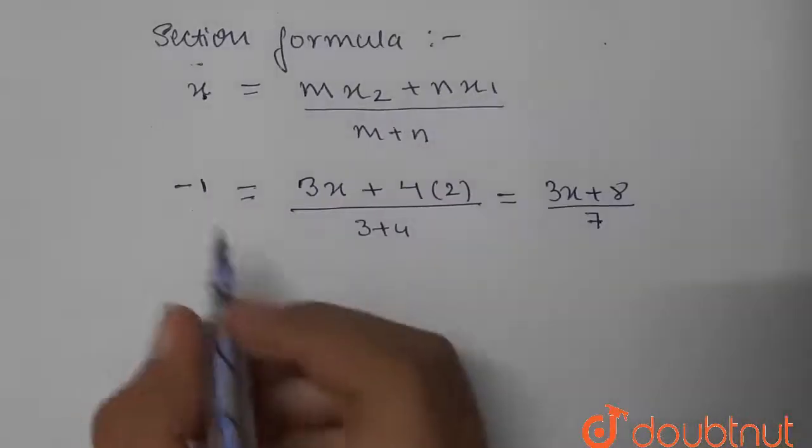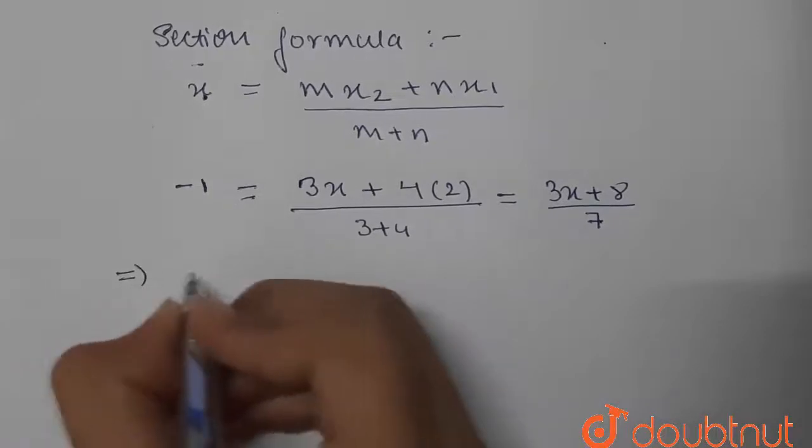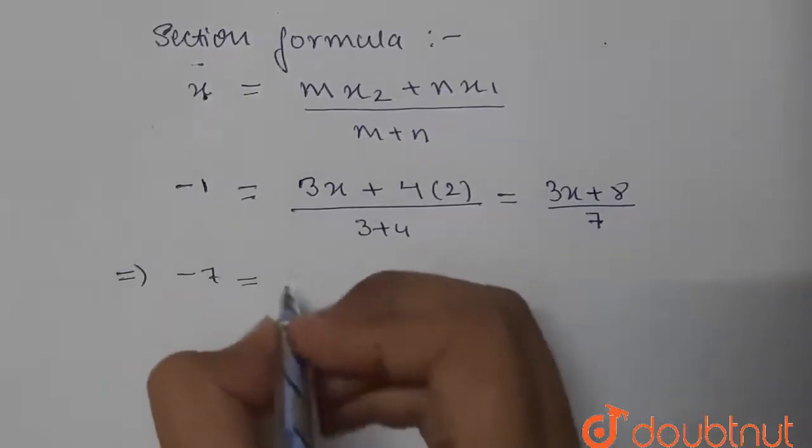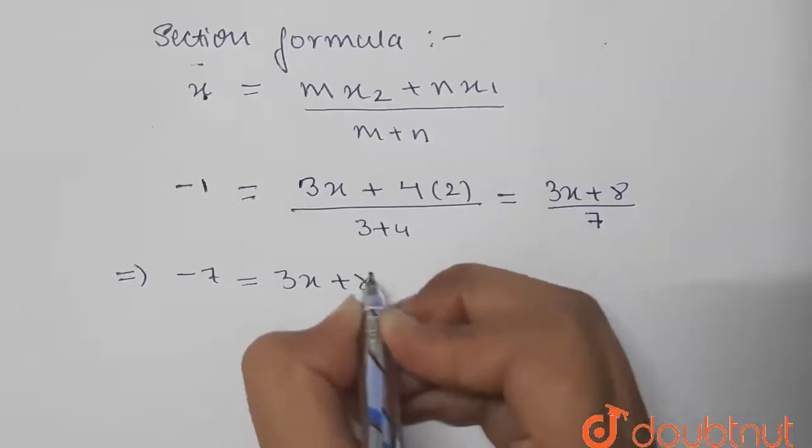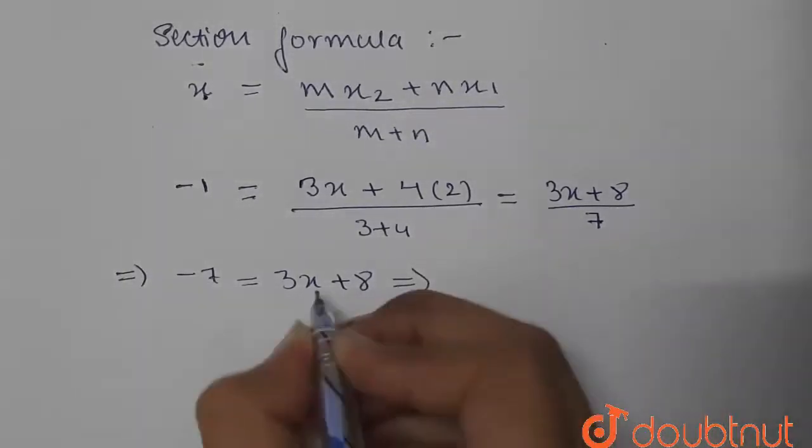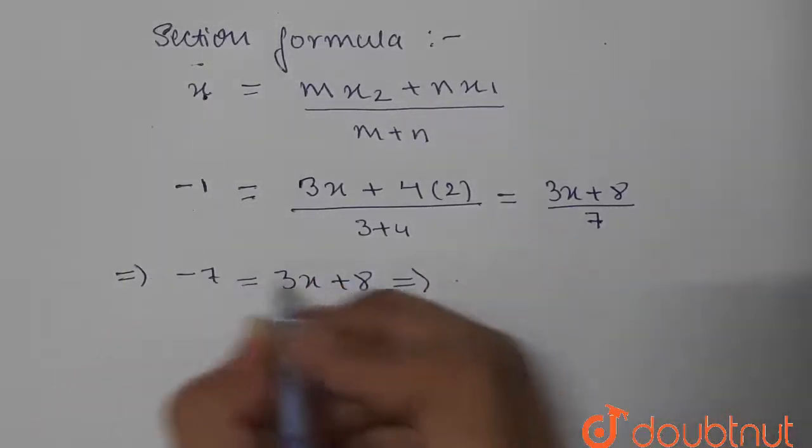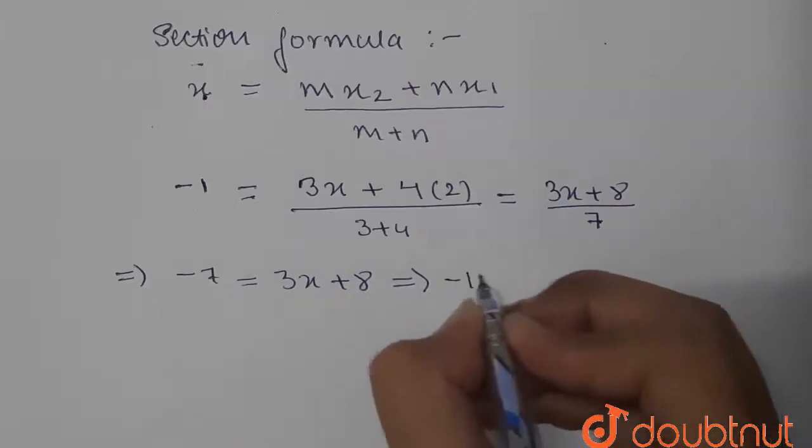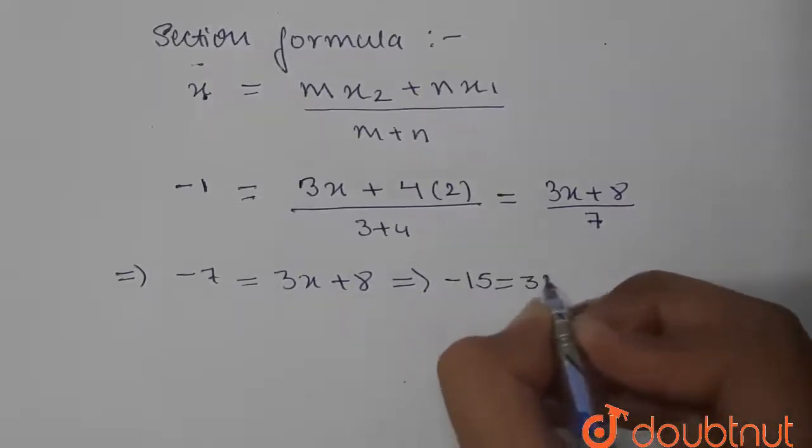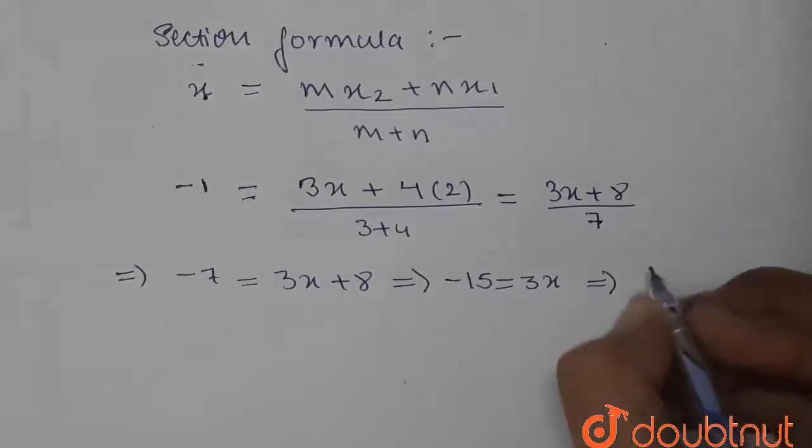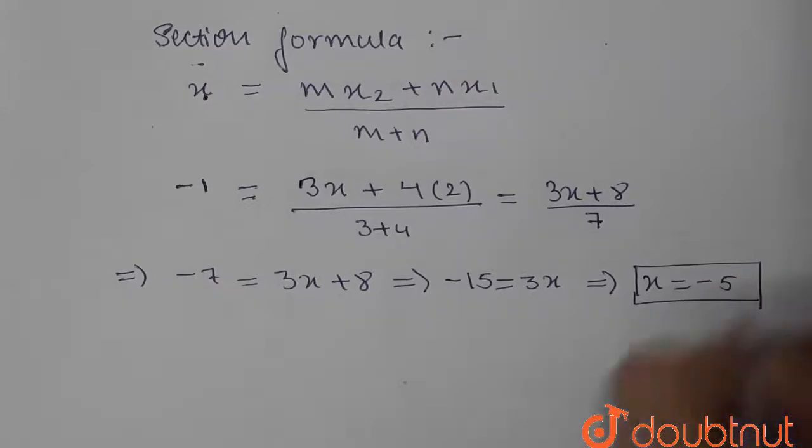When we cross multiply, we get -1 = (3x + 8)/7, which implies -7 = 3x + 8. This implies -7 - 8 = -15 = 3x, so the value for x will be -5. This is the value for x, the x-coordinate for B.